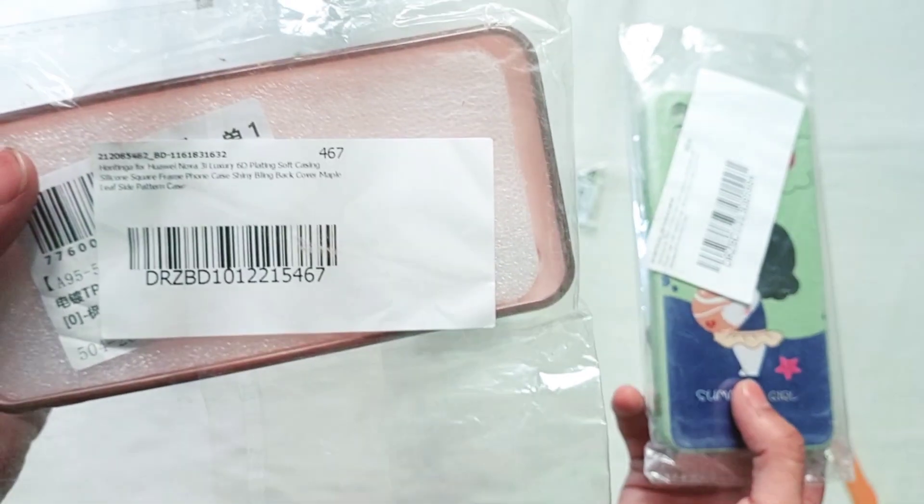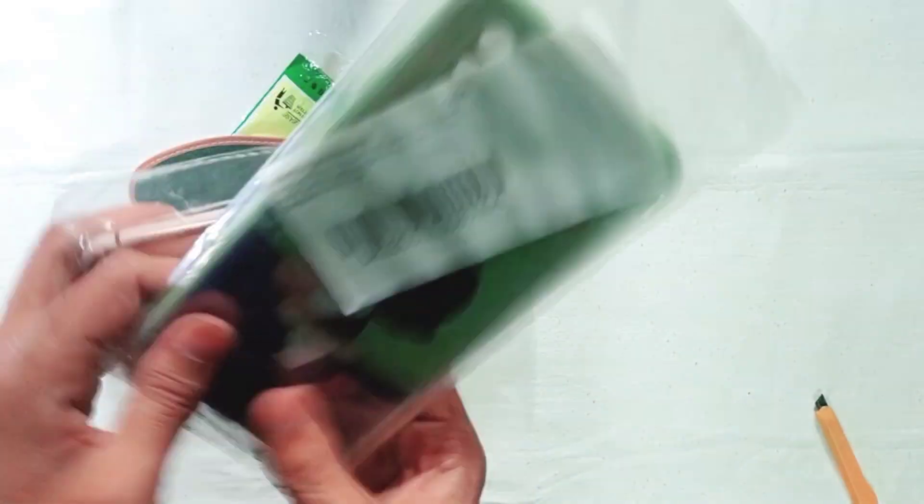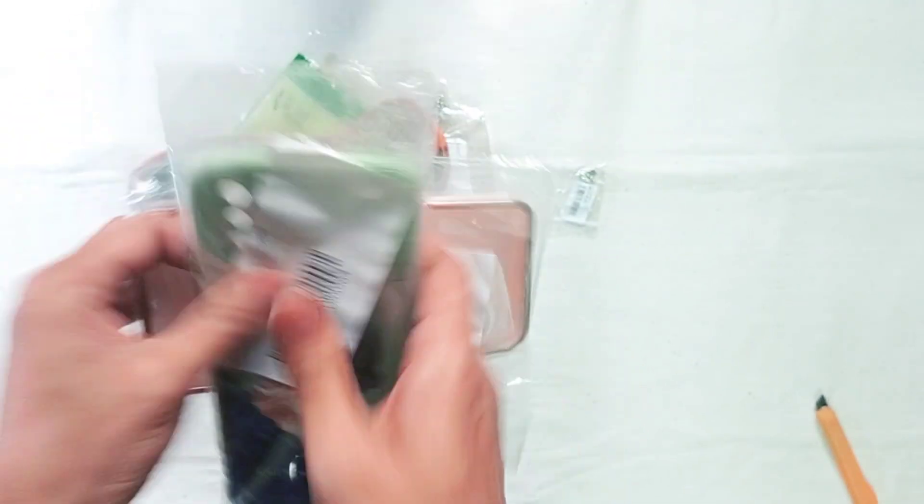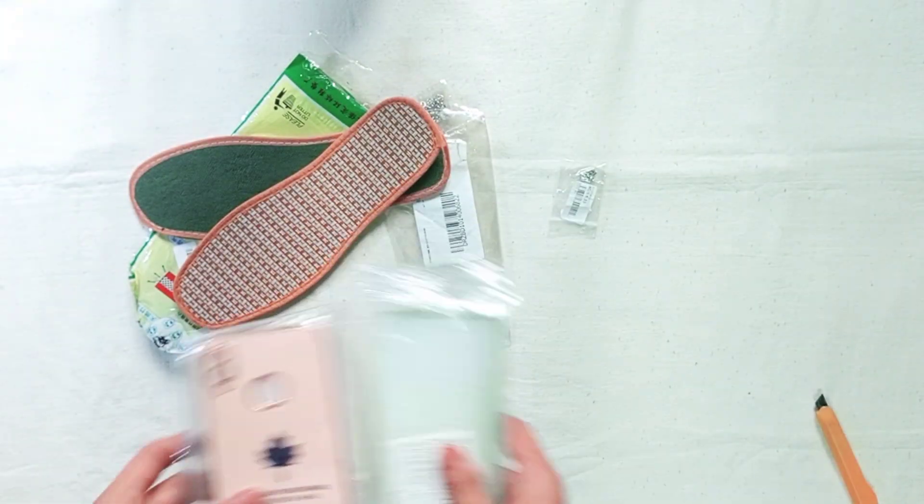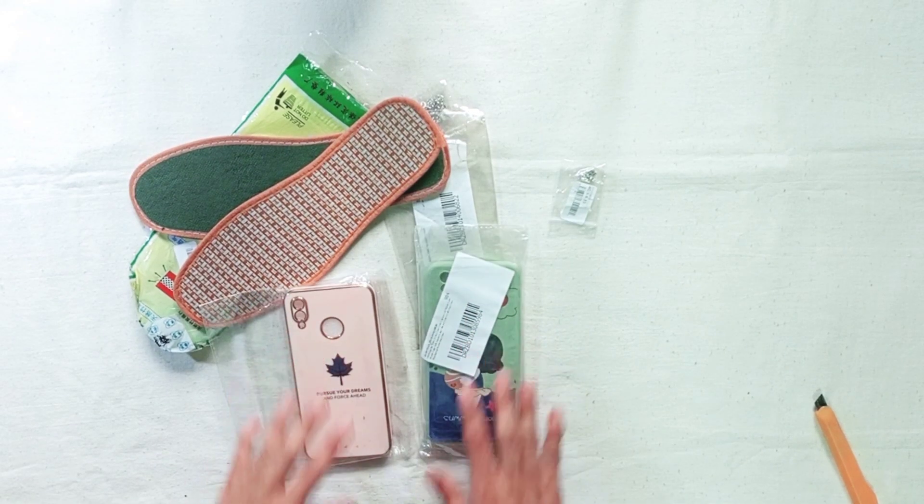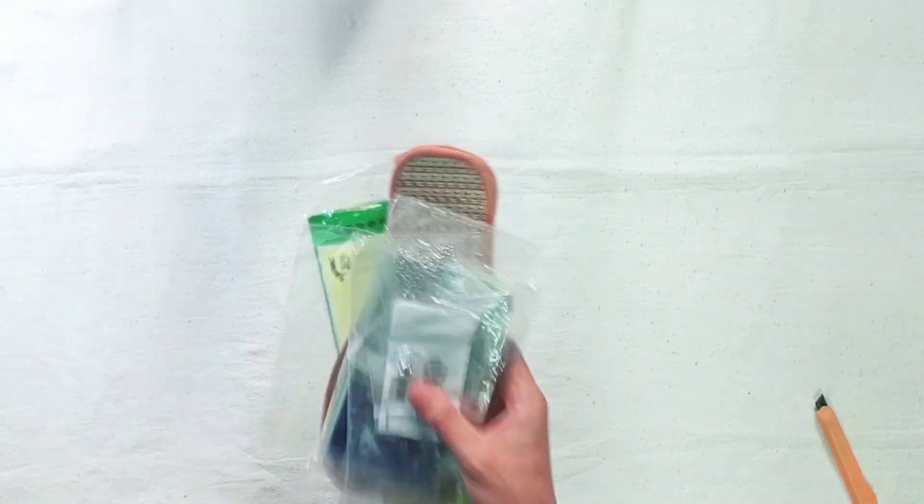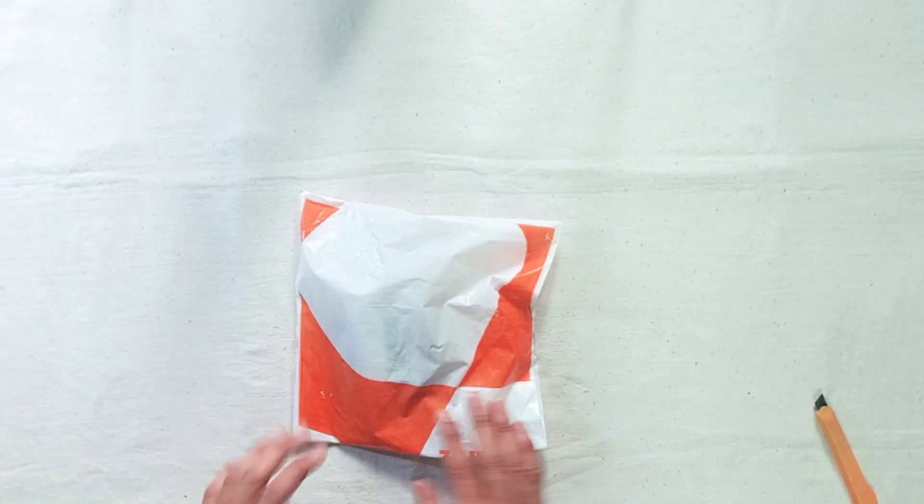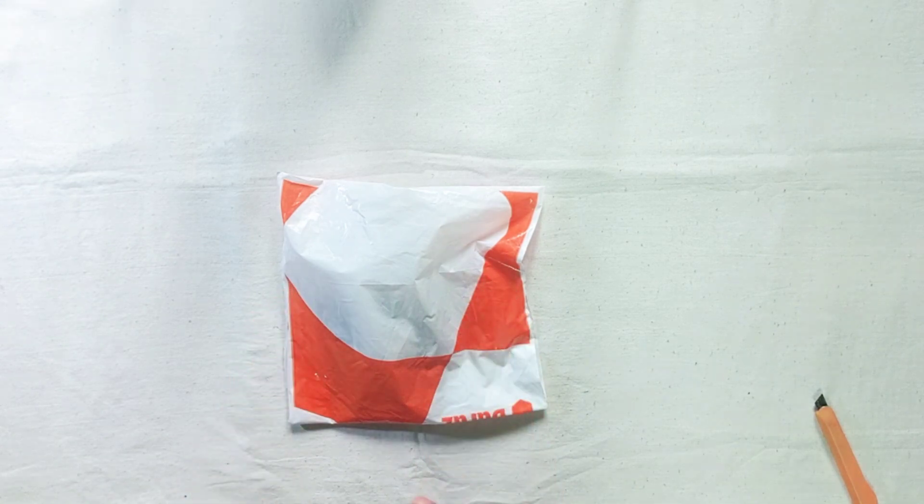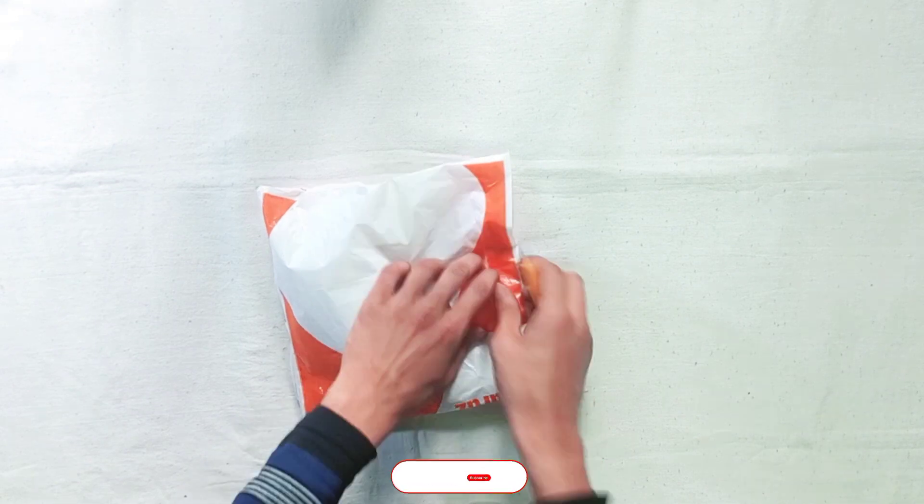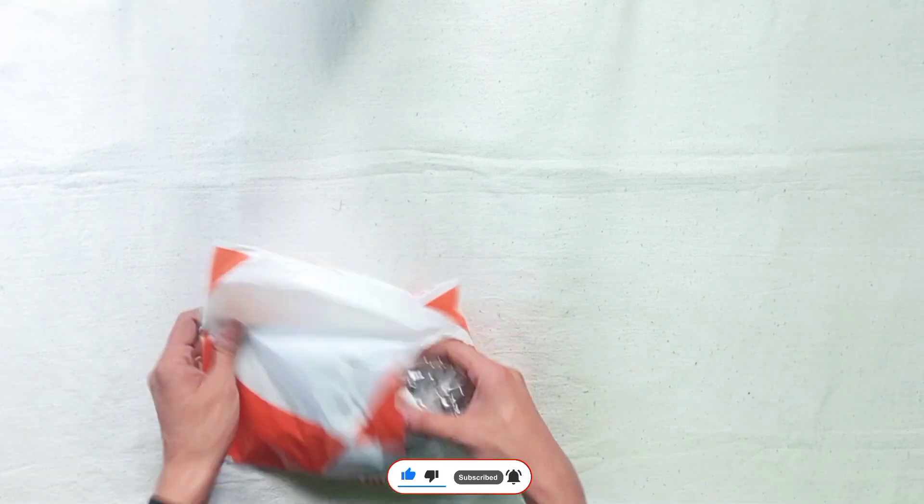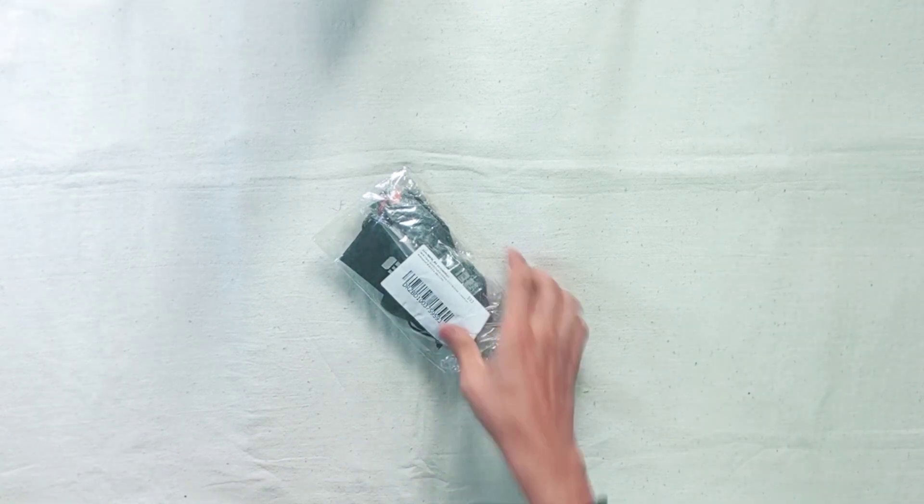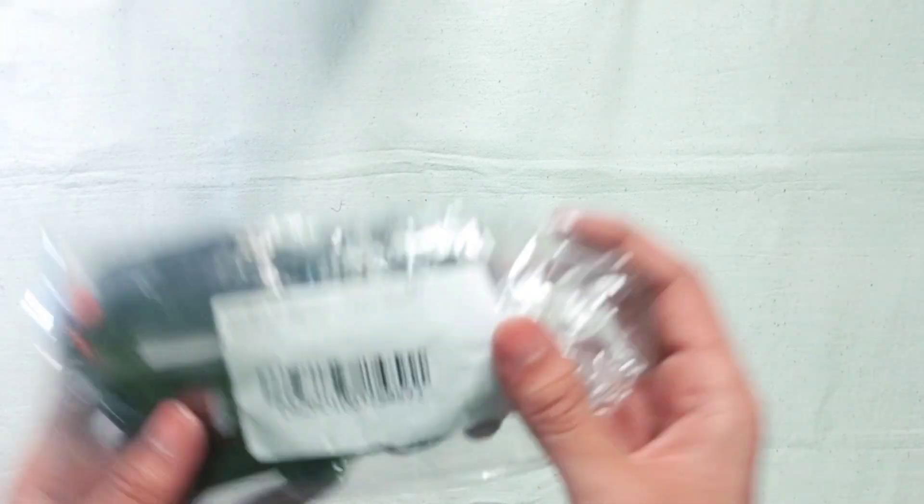Here are phone covers. This is the Huawei Nova 3i cover and this is the Vivo Z1 Pro back cover. Let's see the covers. We don't have much benefit from this box.